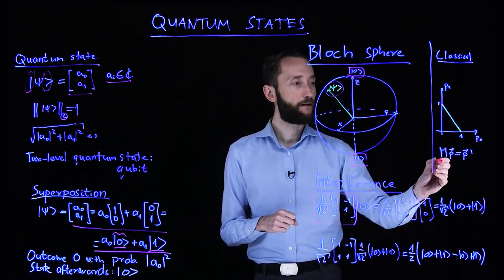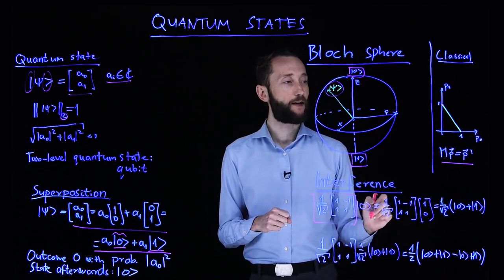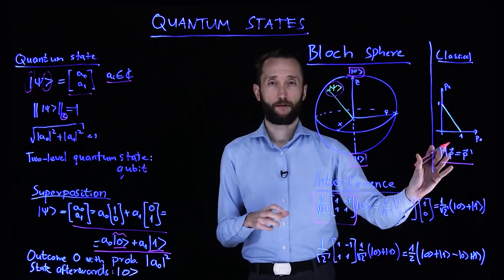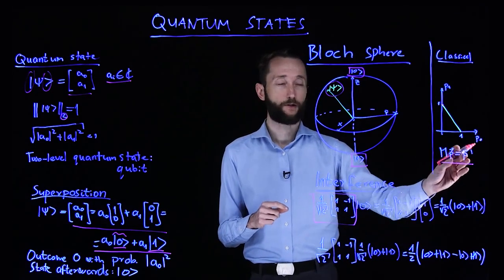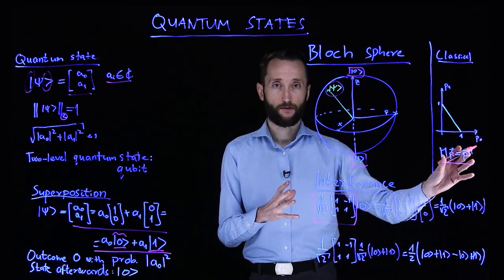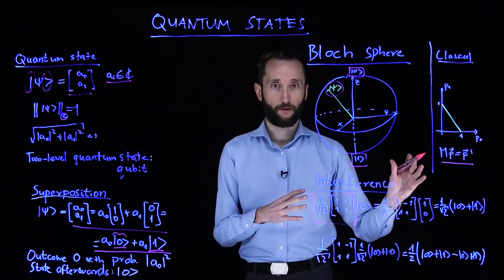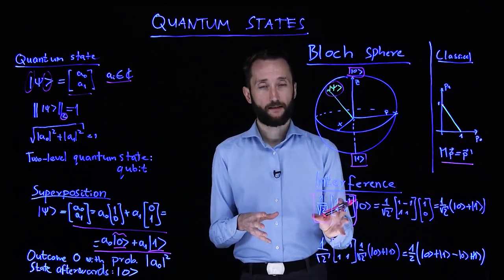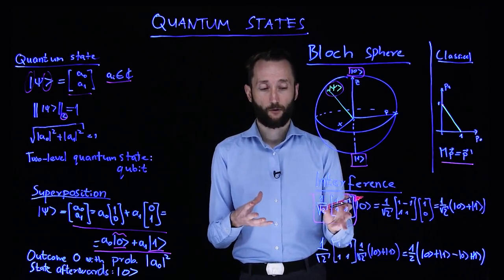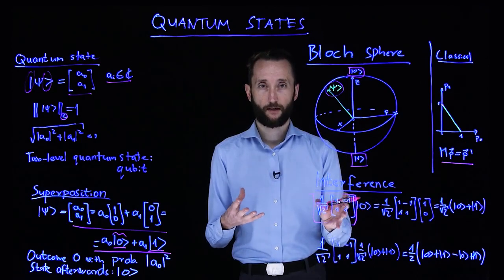Remember that you transform stochastic vectors with stochastic matrices to ensure that the result is also a stochastic vector, a probability distribution. Quantum states are also acted on by these operators, and they fulfill certain conditions that we will learn later.